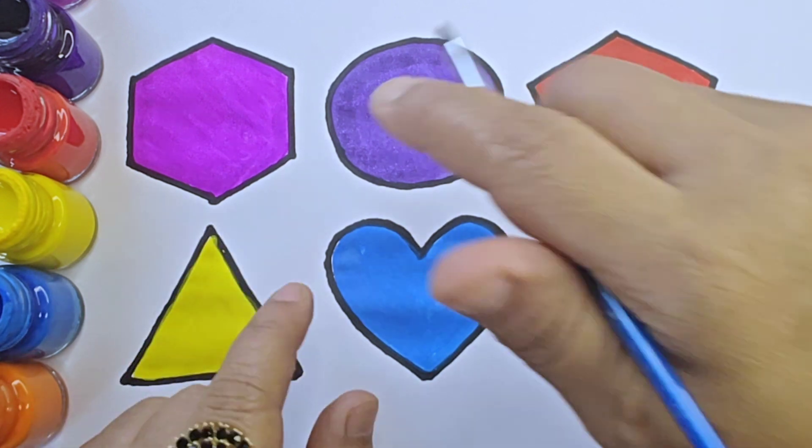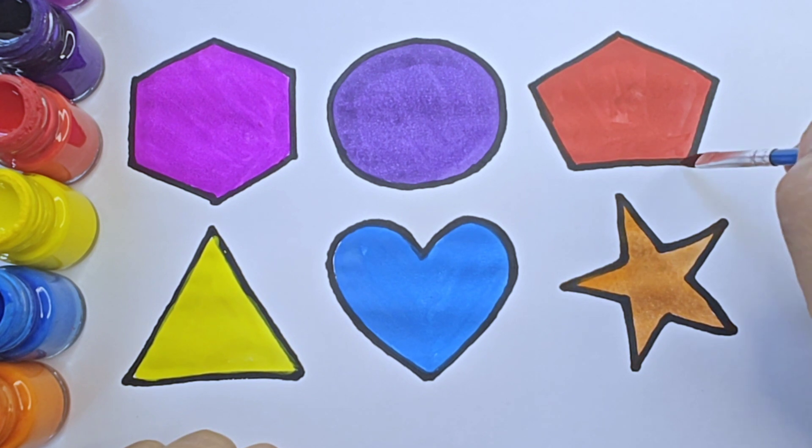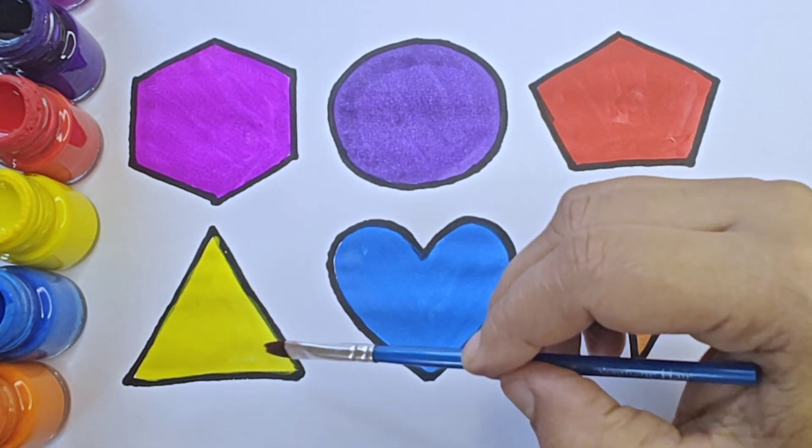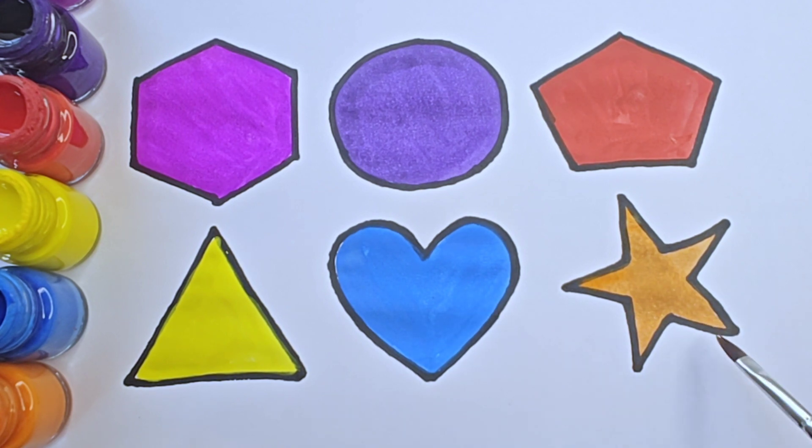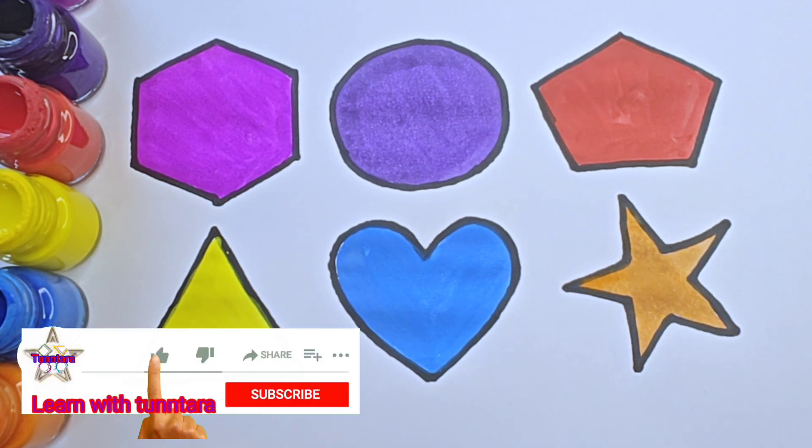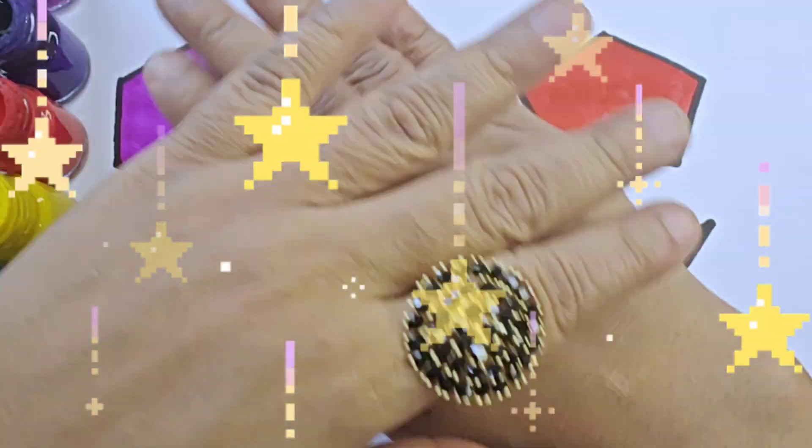Once again. This is hexagon, it is purple color. Circle, violet color. Pentagon, red color. Equilateral triangle, yellow color. Heart, blue color. Star, orange color. Thanks for watching this video. Please like and subscribe and keep learning. Bye bye.